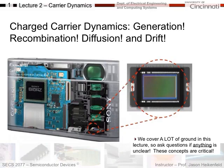Let's move on to our next lecture in this course. We're going to cover charge carrier dynamics — things that are changing — and we'll cover four general topics today: generation, recombination, diffusion, and drift. All four of these concepts are absolutely critically important. The photo of the day is an imaging chip inside a camera, illustrating optical generation of carriers such as electrons and holes, which are then read out using drift and diffusion to form an image.